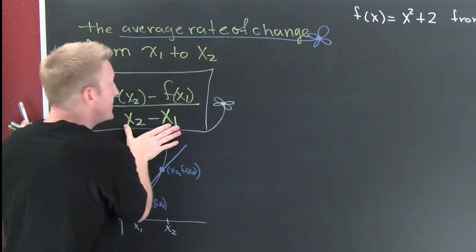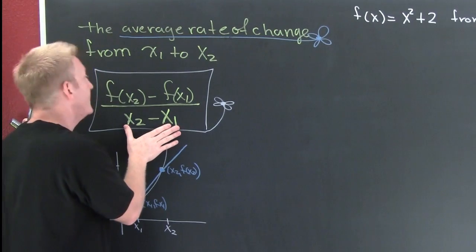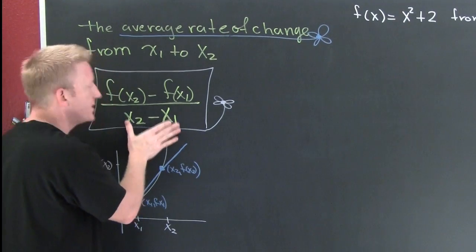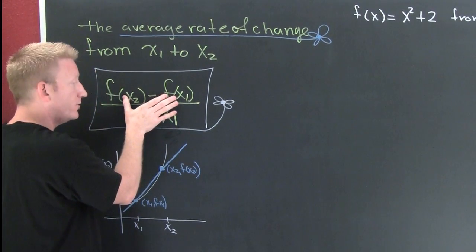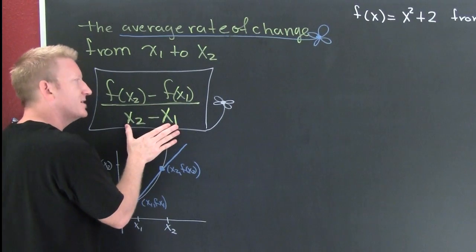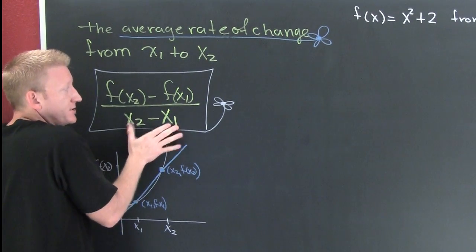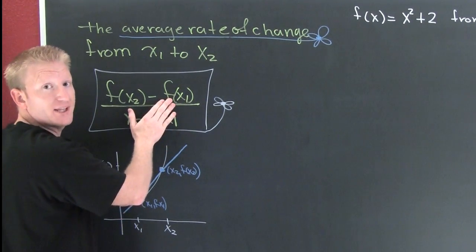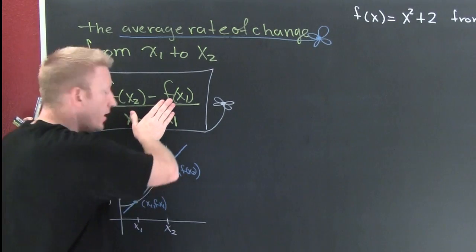Some of you guys are saying that this looks an awful lot like slope. And you know what? It is. It's the change in y over the change in x. What do you mean? I thought those were f of x's. Remember f of x is the function formerly known as y.